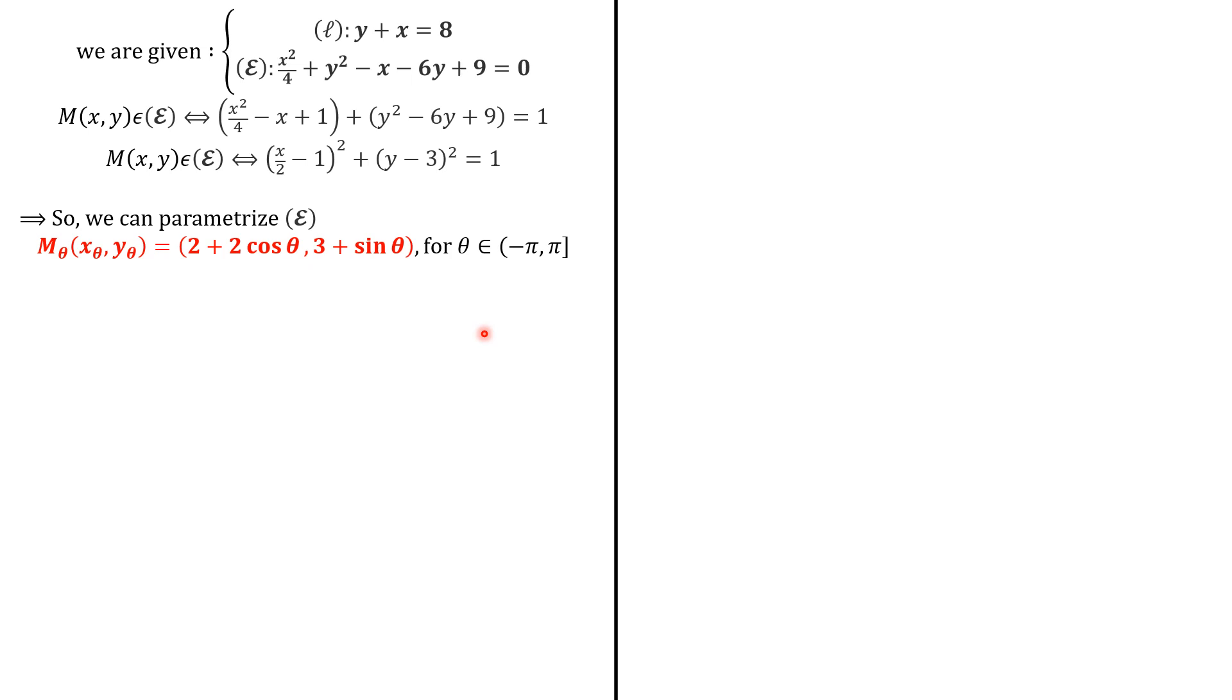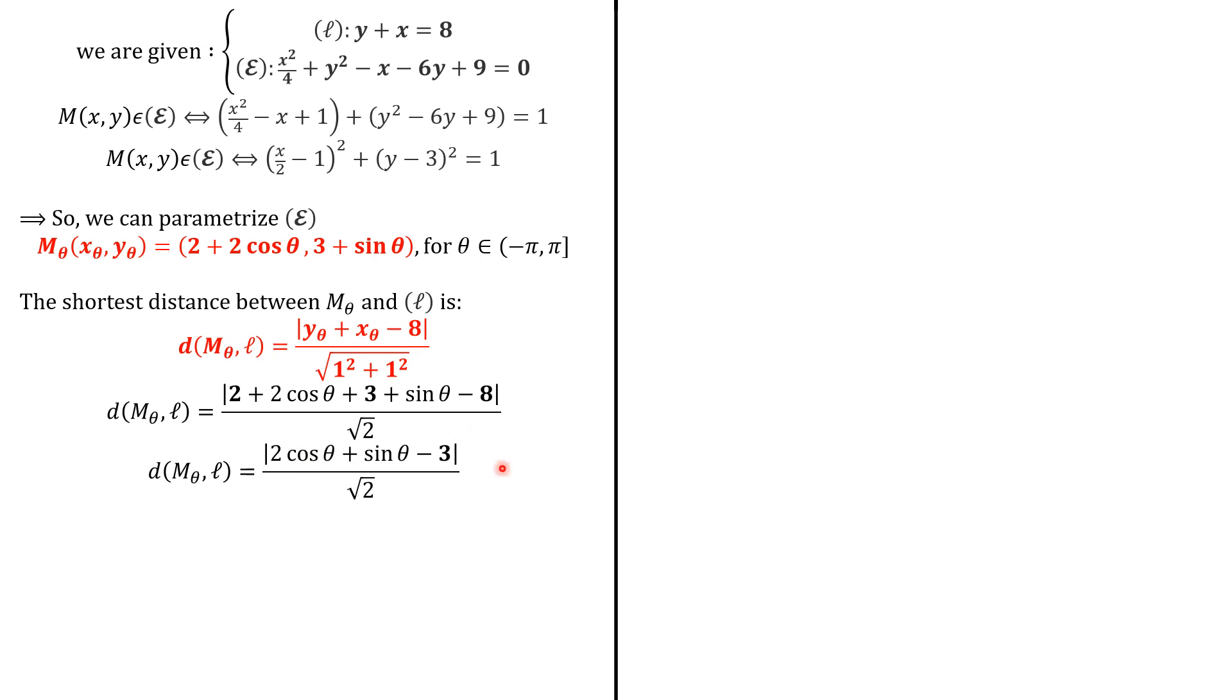For a given point M_θ belonging to the ellipse, we want the shortest distance between M_θ and the line L. We use the distance formula with this equation for the line: d(M_θ, ℓ) = |y_θ + x_θ - 8|/√(1² + 1²). At the denominator, we have √2. When we replace y_θ and x_θ by their values, we know that 2 + 3 - 8 is -3. So we have this new formula for the distance.